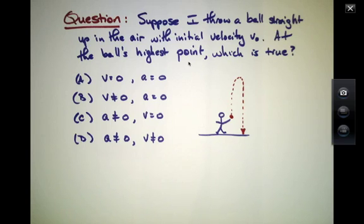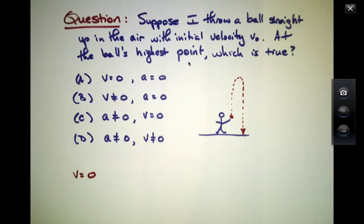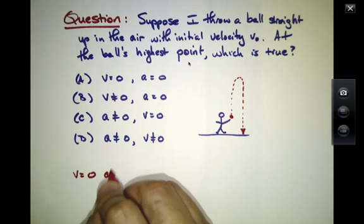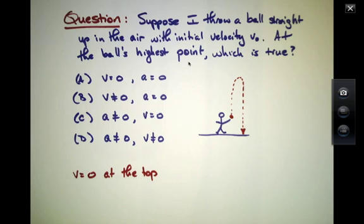I can tell you right now that the correct answer here is C. In fact, we've used that the velocity is zero at the top of the arc several times in solving problems.